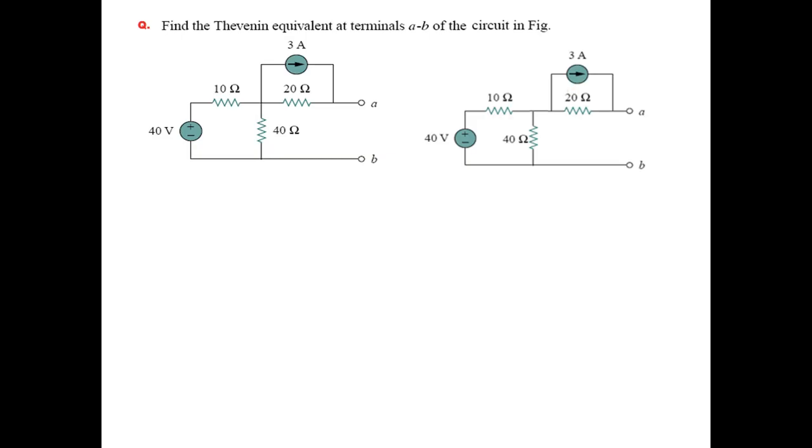The voltage across the 40 ohm resistance we can find by taking a current I1 and then marking the polarity. We call it V1, and now by voltage division rule you can find the voltage.